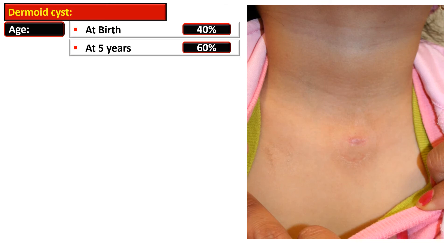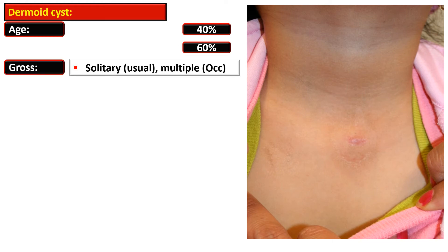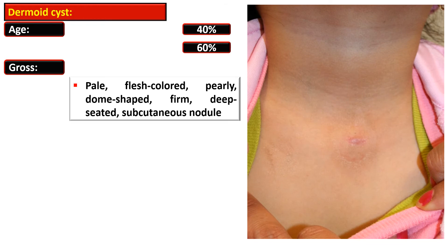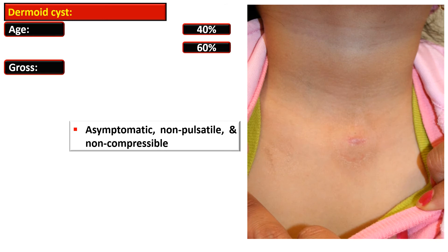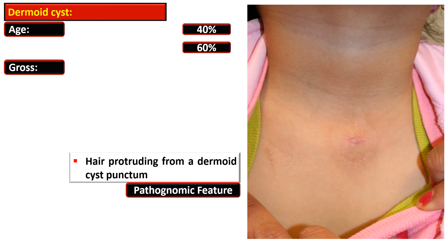About 40% of dermoid cysts are diagnosed at birth, while 60% are diagnosed by the fifth year of age. They are usually solitary, however occasionally they can be multiple. The lesion is a pale flesh-colored, pearly dome-shaped, firm, deep-seated subcutaneous nodule that is asymptomatic, non-pulsatile, and non-compressible. The pathognomonic feature of dermoid cysts is the presence of hairs protruding from a punctum.